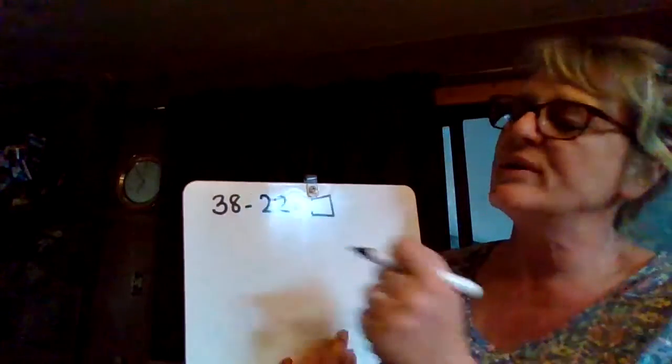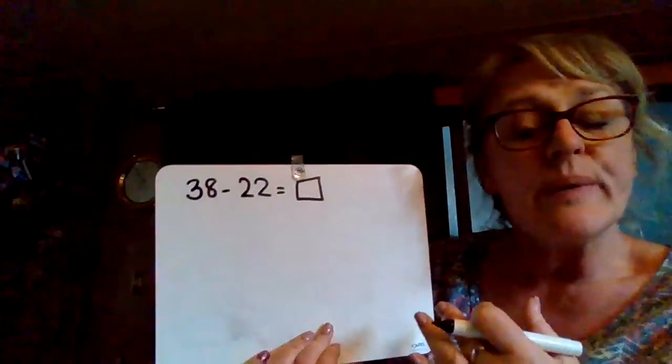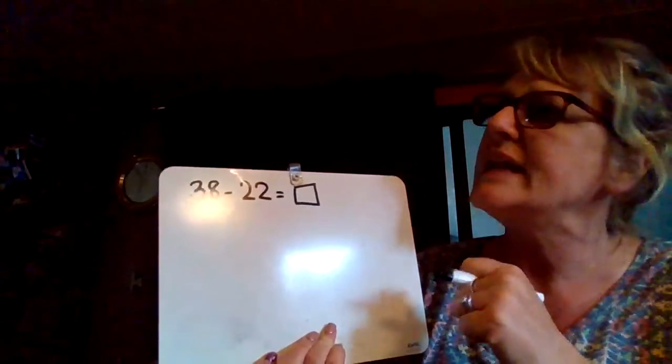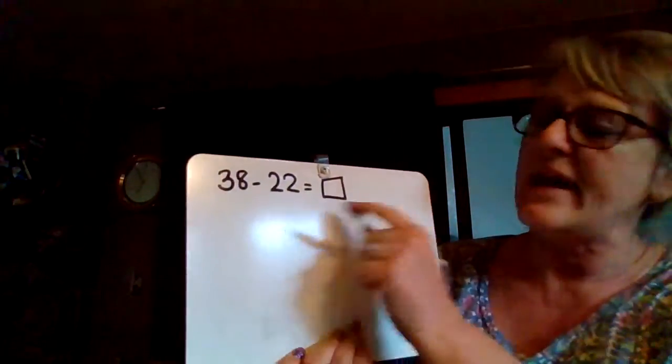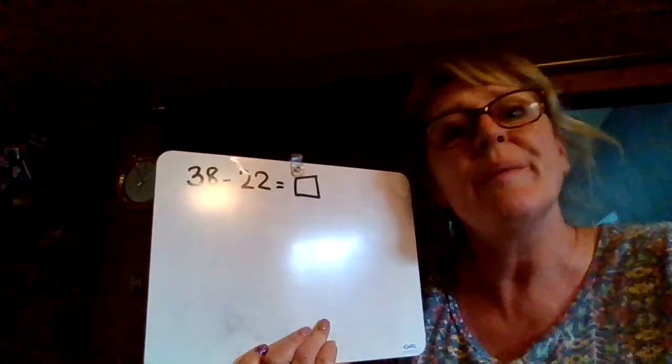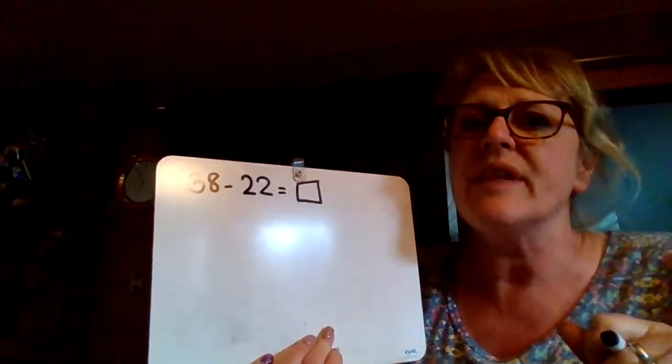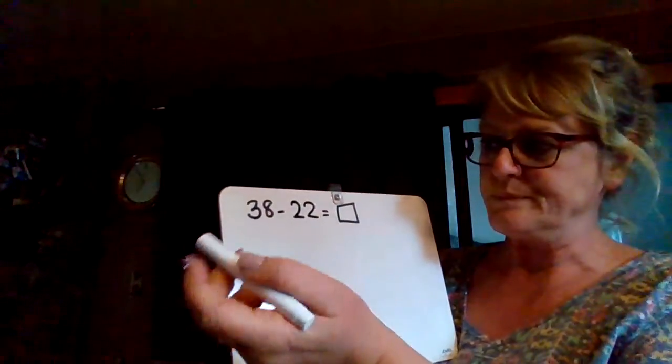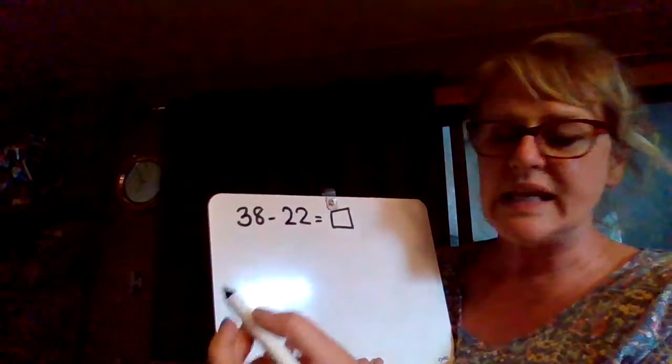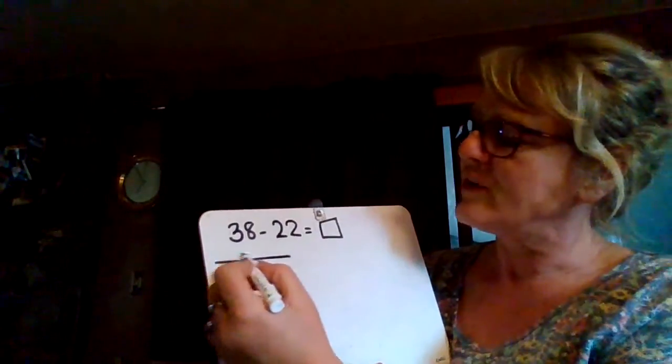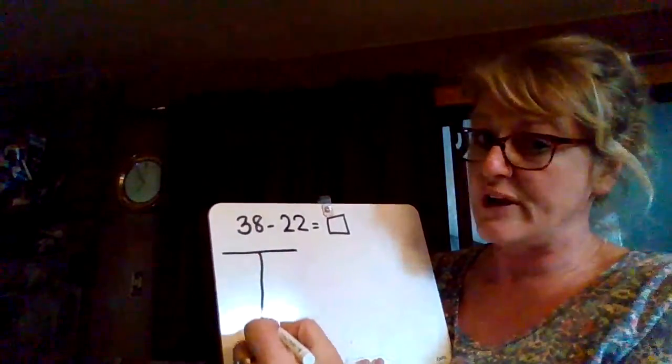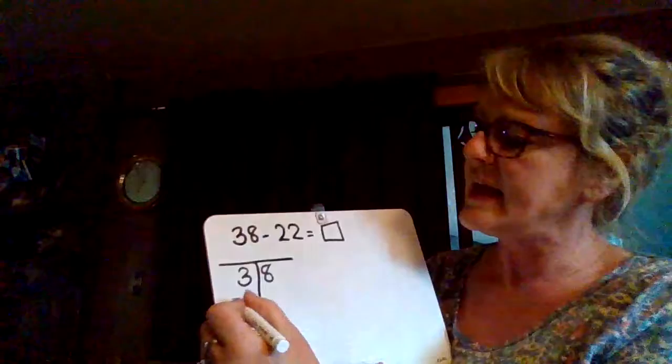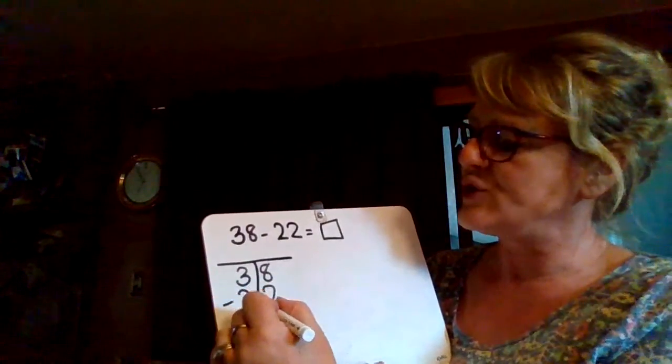So when you have a number like 38 and you want to take away 22, like I have $38 and I spent $22 at the store, I want to know how much I have left. This is how we can figure it out. We've learned tall tees. They're a little bit different for subtraction, but 38 take away 22.